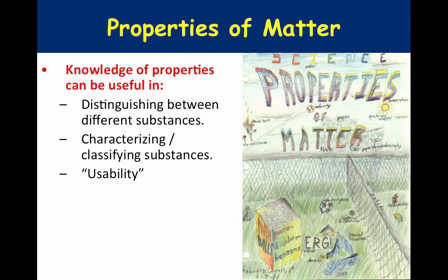Properties of matter in chemistry can be synonymous with the way chopstick makers use properties of matter in their investigation of bamboo. Knowledge of properties can be useful in distinguishing between different substances, characterizing or classifying them, or — like the chopstick makers — understanding usability.